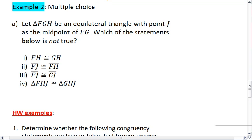This is a multiple choice example. Let triangle FGH be an equilateral triangle with point J as the midpoint of segment FG, which of the statements below is not true. Take a moment, work through the example, resume the video when you're ready to see the solution.